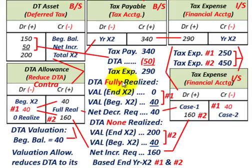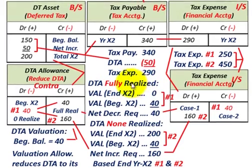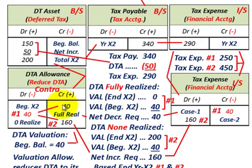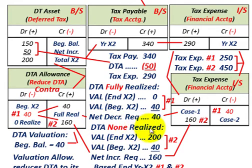In Case 1, the deferred tax asset was fully realized — the $200,000 was fully realized — but we had a beginning balance of $40,000. So what we had to do was eliminate this allowance account: we had a credit of $40,000, so we debited it out for $40,000.